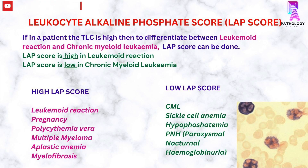Causes of low LAP score, other than CML, include sickle cell anemia, hypophosphatemia, and paroxysmal nocturnal hemoglobinuria.